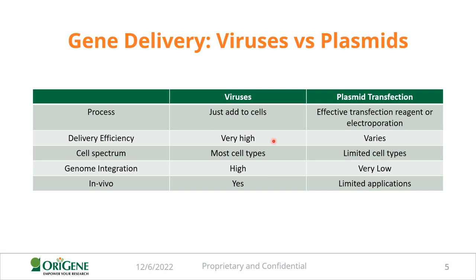For cell spectrum, viruses can infect a wide range of cells — from hard-to-transfect to easy ones — whereas plasmid transfection is limited and can't always get into neurons. For genome integration, the chances are higher with viruses depending on which you use: lentivirus integrates into the genome, whereas AAV does not. Plasma transfection has a very low integration chance. For in vivo studies, viruses are a good option, and depending on the virus, you also get low immunogenicity.